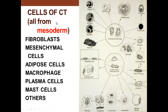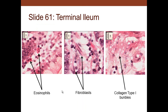Cells of connective tissue include undifferentiated mesenchymal cells, which give rise to a host of cells: bone marrow cells, bone cells, cartilage cells, endothelial cells, macrophages, and fibroblasts. Connective tissue cells also include adipose cells, macrophages, plasma cells, mast cells, and more.